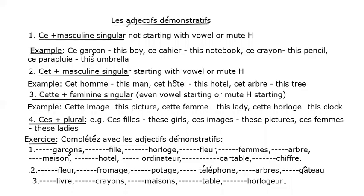Let's study les adjectifs démonstratifs. There are four types of demonstrative adjectives. Number one: 'ce', used with masculine singular nouns not starting with a vowel or mute H. Examples: ce garçon (this boy), ce cahier (this notebook), ce crayon (this pencil), ce parapluie (this umbrella).